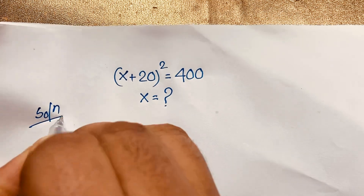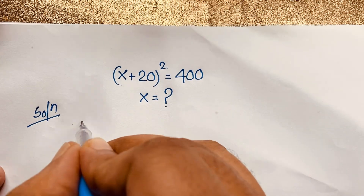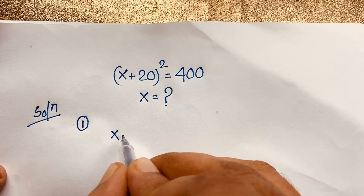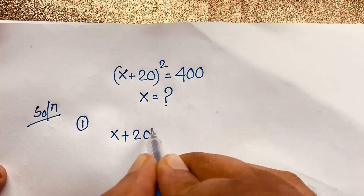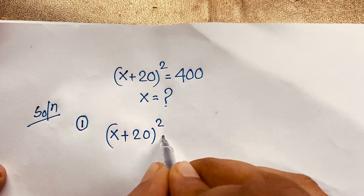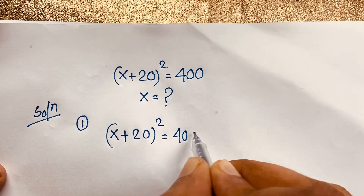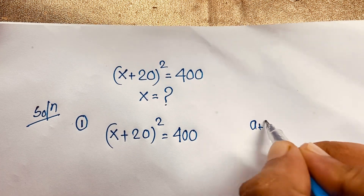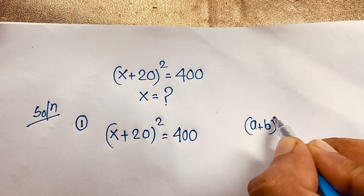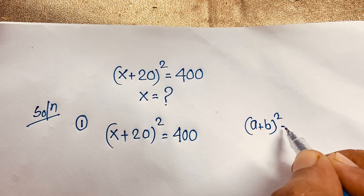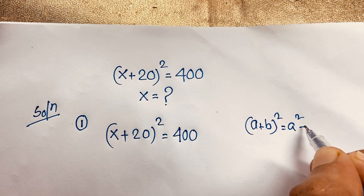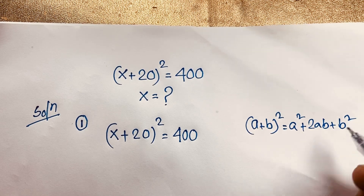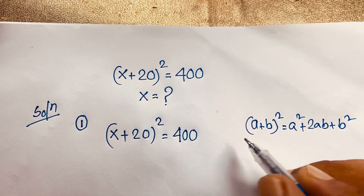I solved this question using 3 methods. This is our first method. Here is (x + 20)² = 400. Now, one identity is (a + b)² = a² + 2ab + b². I apply this identity here.